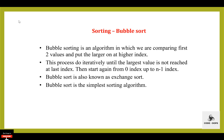If the given array has to be sorted in ascending order, then bubble sort will start by comparing the first element of the array with the second element. If the first element is greater than the second element, it will swap both elements and then move on to compare the second and the third element, and so on. If we have total n elements, then we need to repeat this process for n-1 times. It is known as bubble sort because with every complete iteration, the largest element in the given array bubbles up towards the last place or the highest index, just like water bubbles rise up to the water surface.